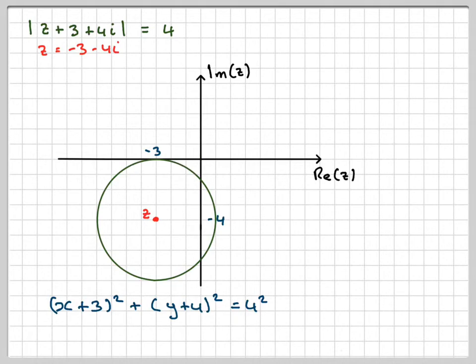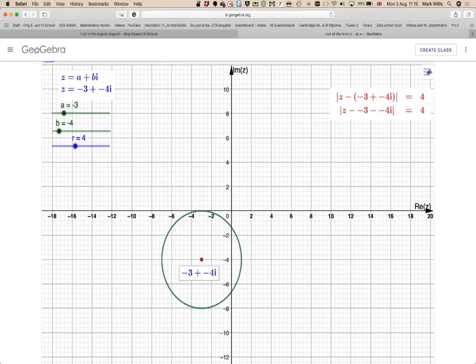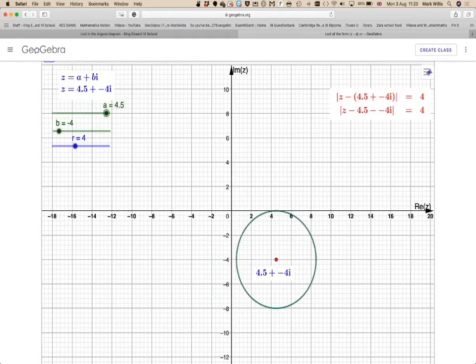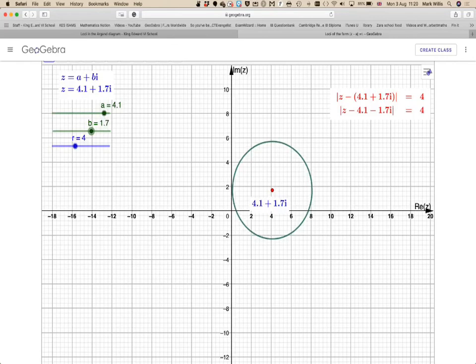And I will put the GeoGebra applet in the notes of the video. So here we have our applet. Here we have our value here, and we can see the one given in the question. But you can see if I move 3, if I move these I can find other values.